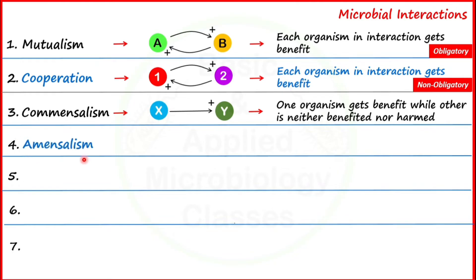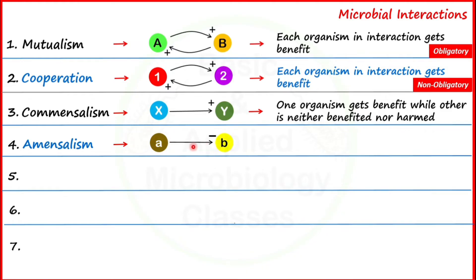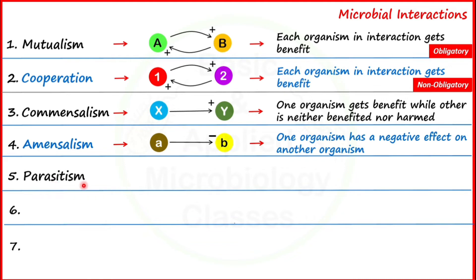The fourth type is amensalism. We again consider two different microbial populations A and B. Amensalism is like commensalism in terms of being unidirectional, but it is opposite to commensalism in that one microorganism poses a negative impact on the other — it produces some kind of substance or shows a response that inhibits the growth of the other microbial population. So in amensalism, one organism has a negative effect on the other.